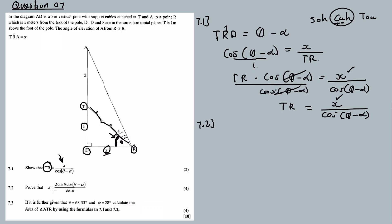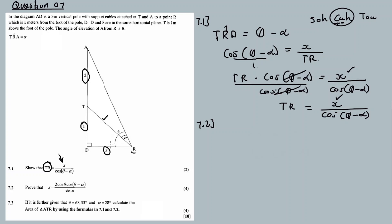Question 7.2 asks us to show that X equals a certain expression. We know TR, we know AT is 2, we know TD, we know DR in terms of X, but we don't have AR. We have to show that X equals that expression. A little bit of creativity and imagination is needed. So, as for this one, I need to use triangle ATR.